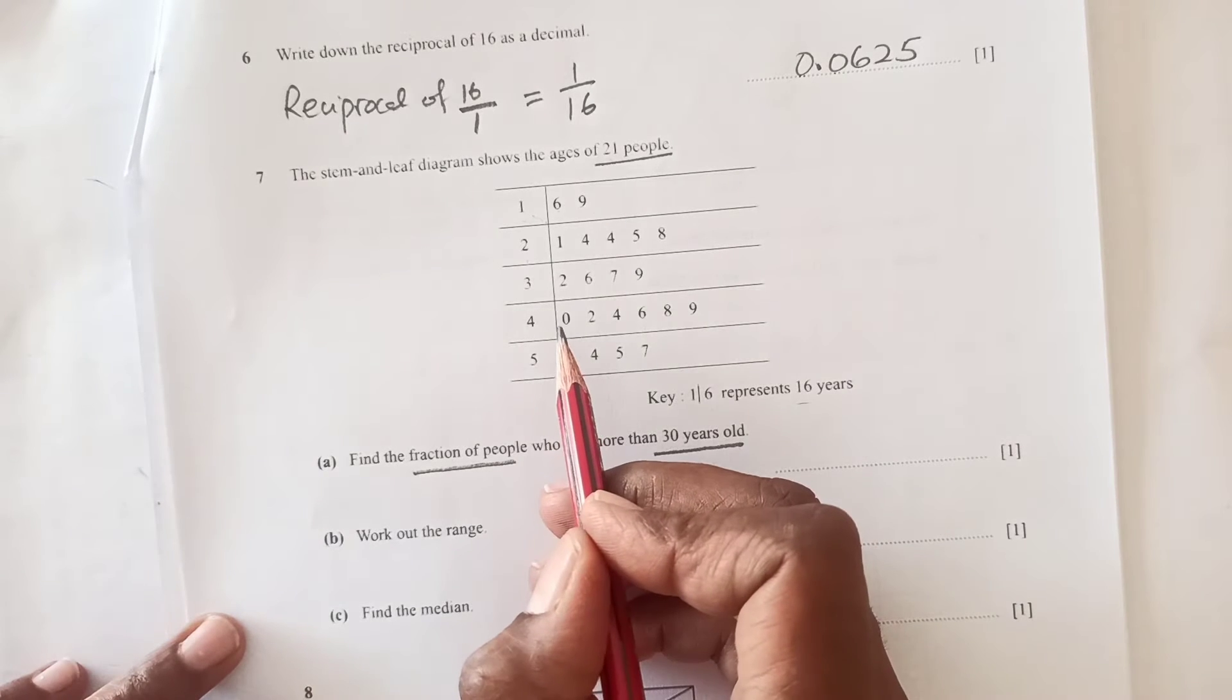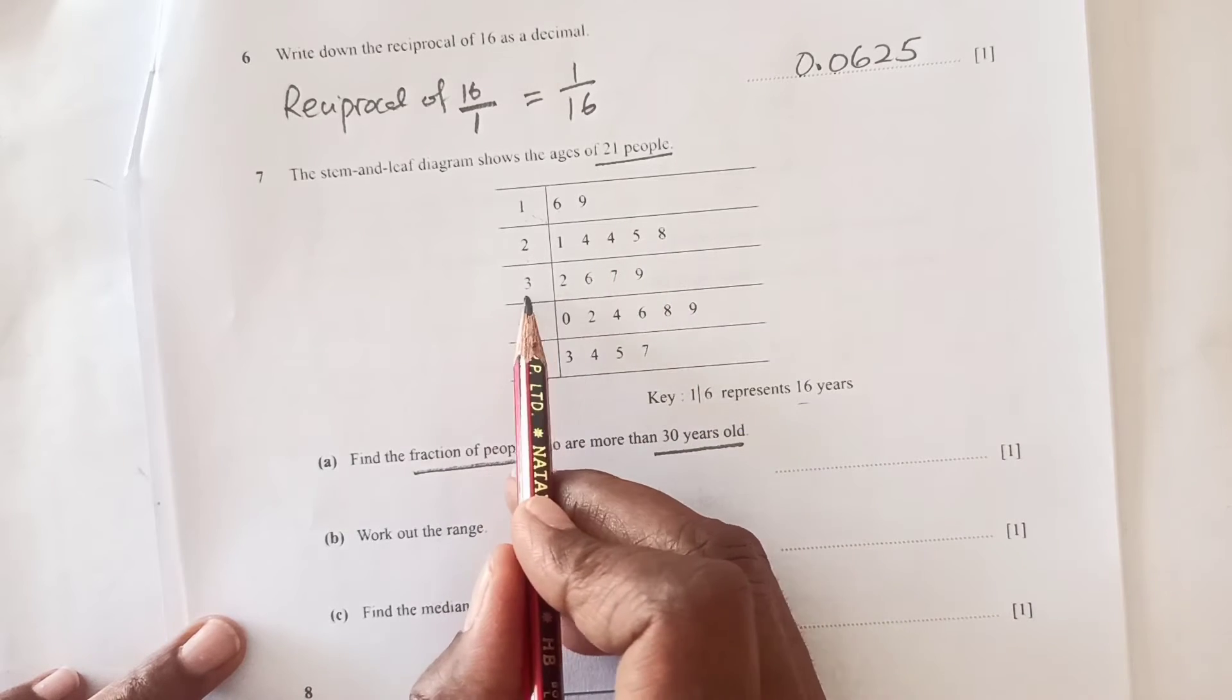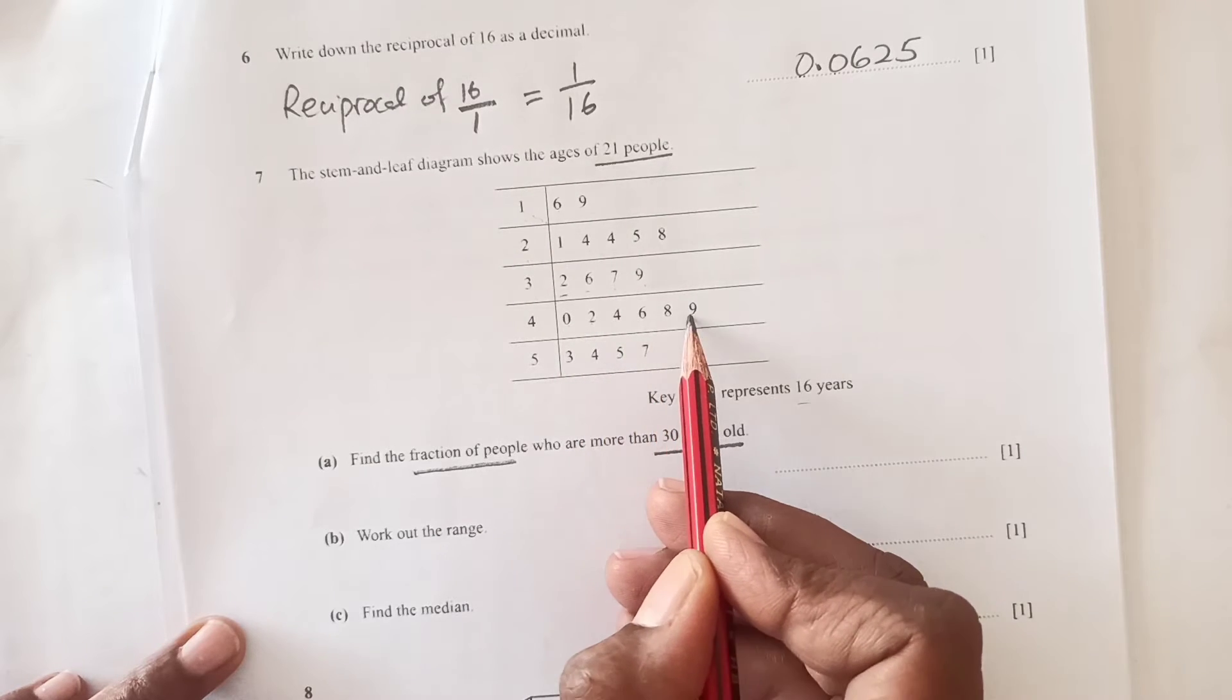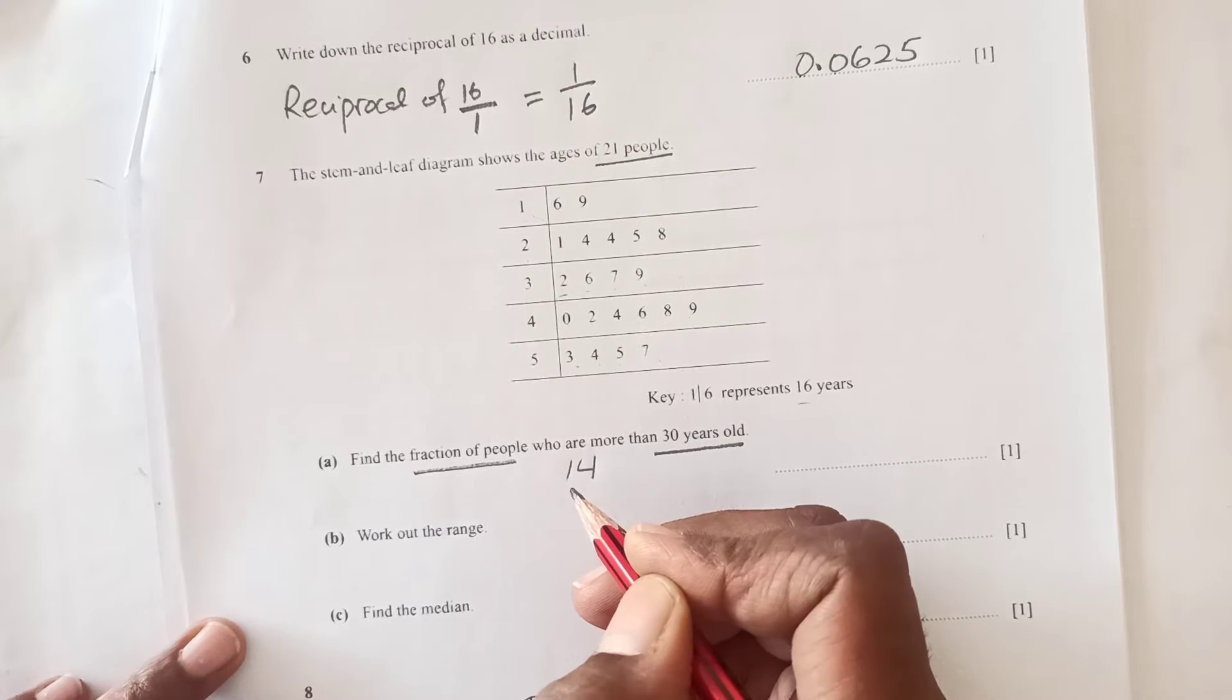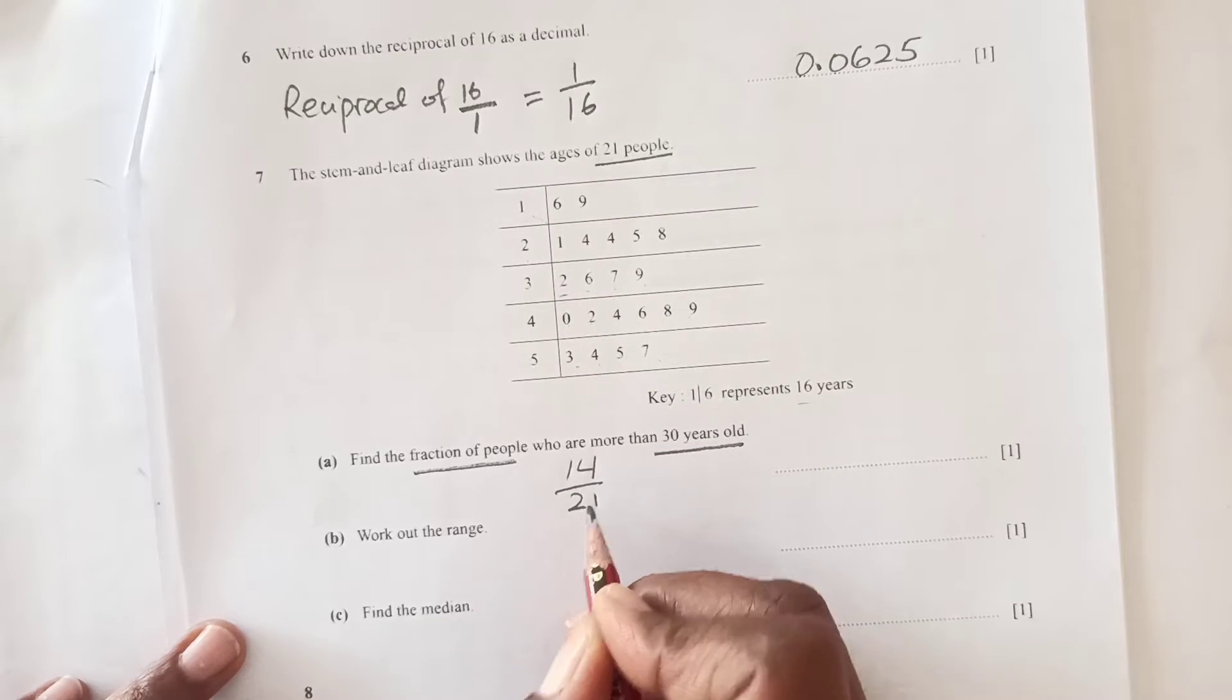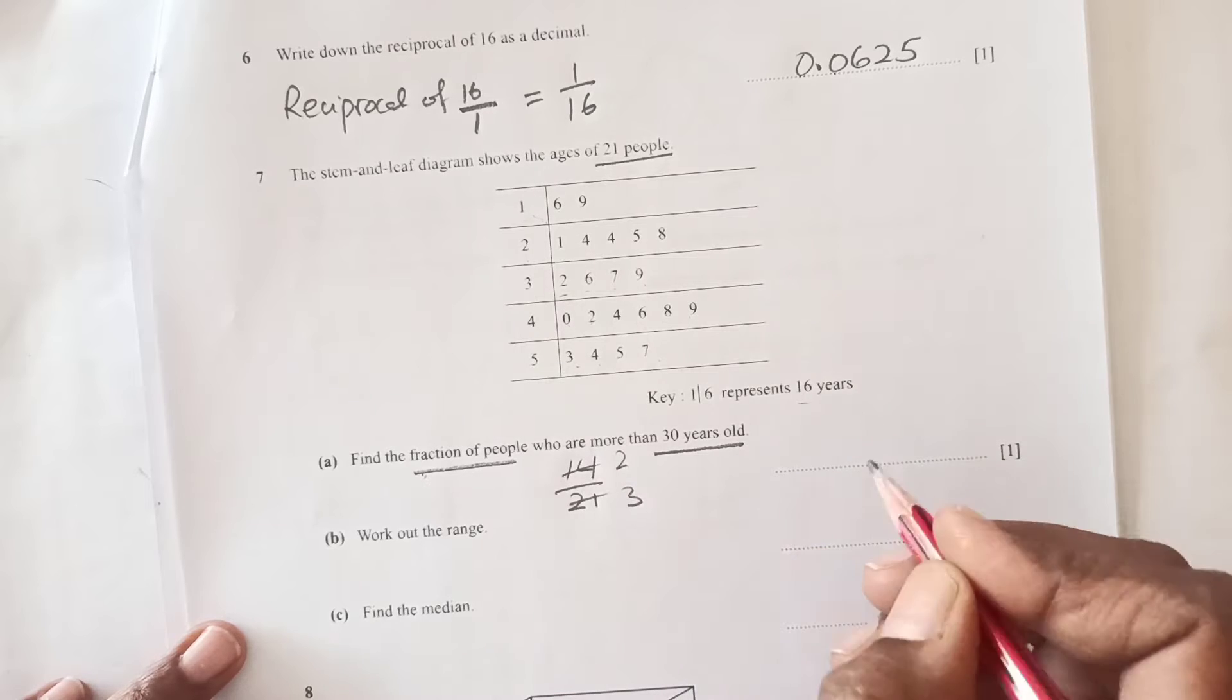More than 30 years old: 30 starts from here. So 1, 2, 3, 4, 5, 6, 7, 8, 9, 10, 11, 12, 13, 14. So 14 are more out of 21. We will simplify this: 7 times 2 and 7 times 3, so 2 over 3 is the final answer.